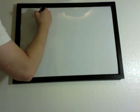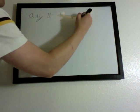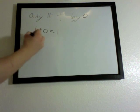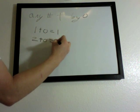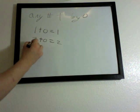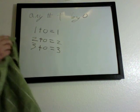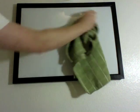Let's go over another rule. Any number added by zero will equal the original number. For example, one plus zero is one. Two plus zero is two. Three plus zero is three. Just remember all these rules that we're talking about — they will come in handy, mostly the rules.